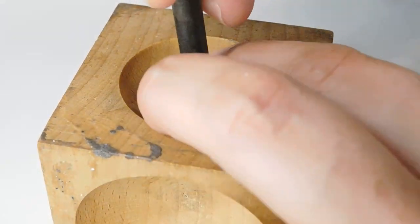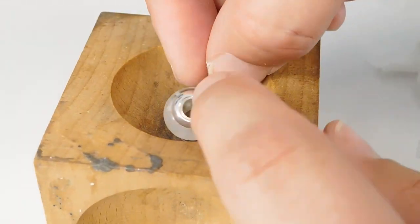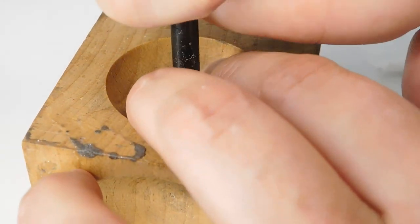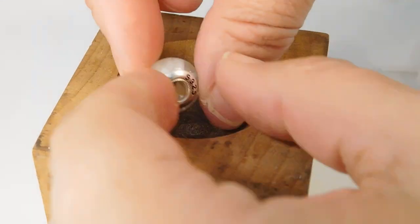You can use the 6mm ball bearing if you don't have a doming punch and rest the bead on a piece of fabric. I have another video showing you how to do this but the doming punches are much easier to use and give more consistent results.